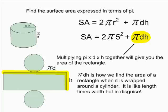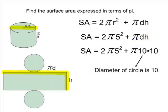For this cylinder, the diameter is 10 inches, so we are going to substitute 10 inches for the variable d. And looking at our cylinder, we can see that it is 10 inches tall, so we are going to substitute 10 for the variable h.